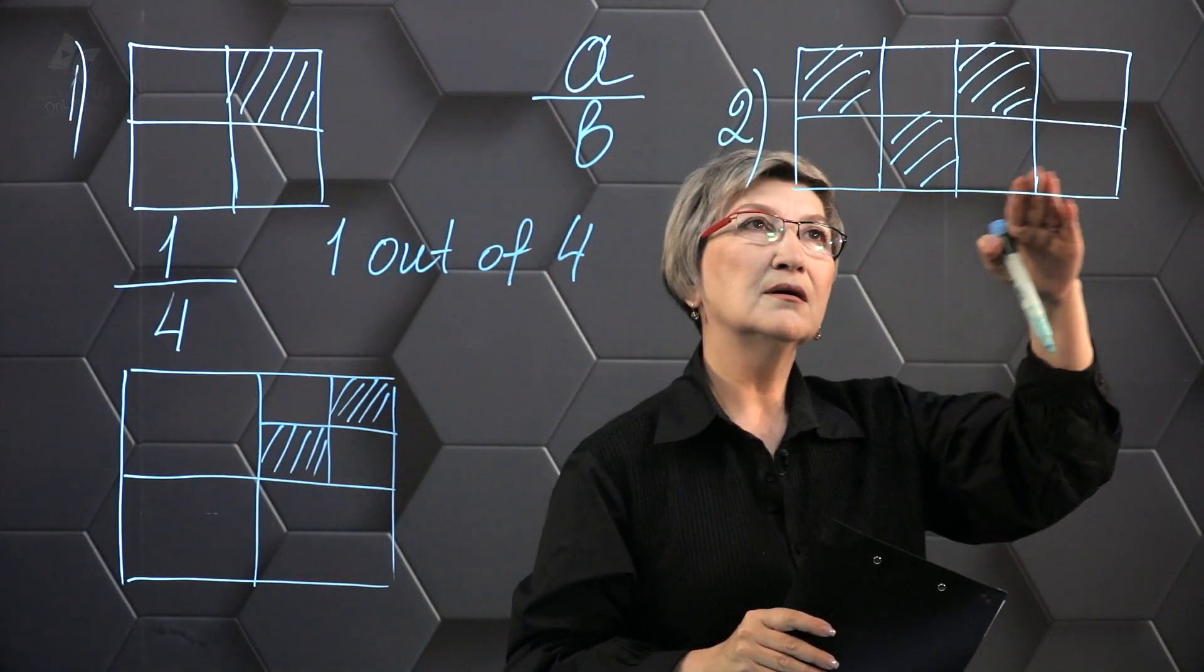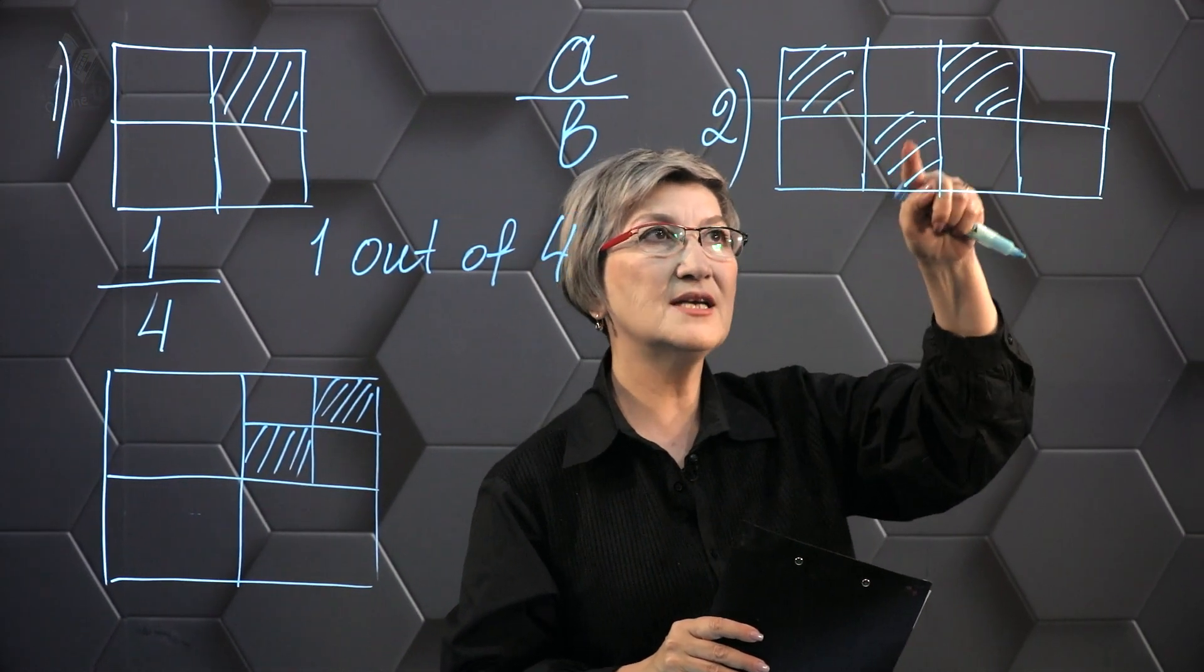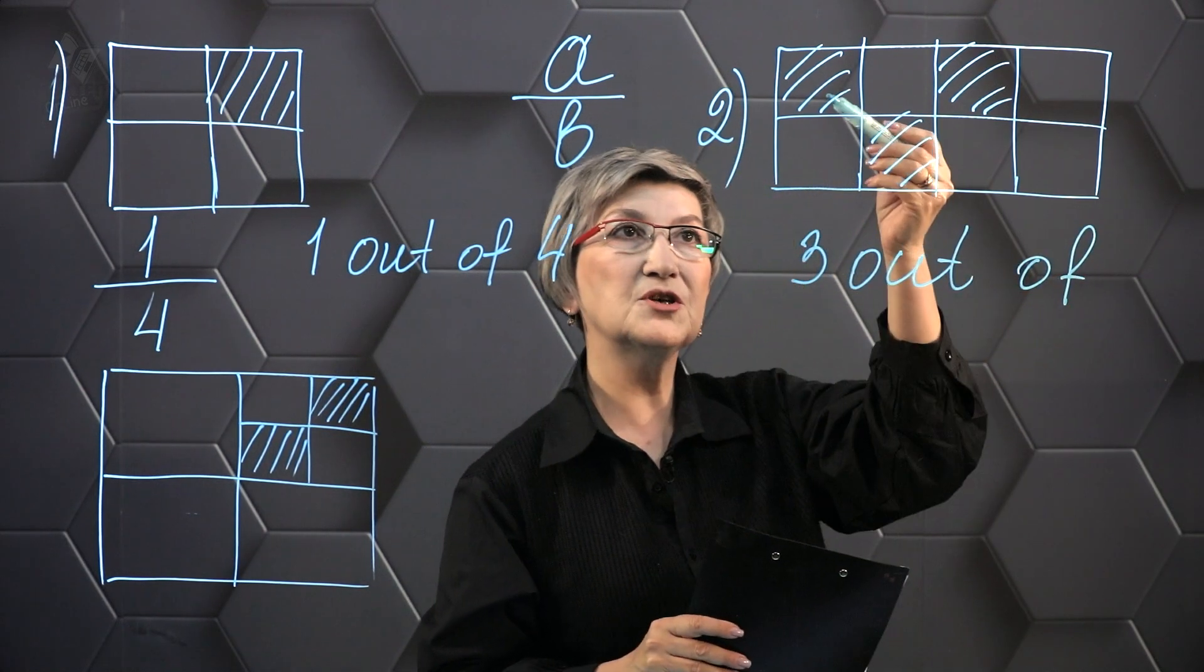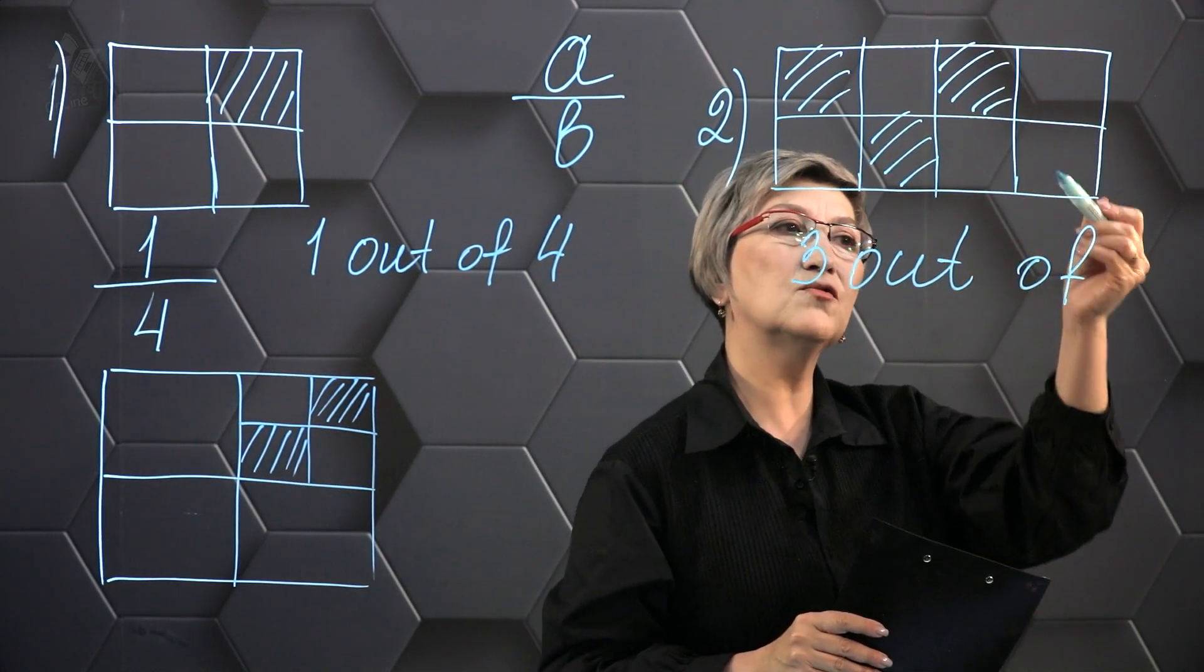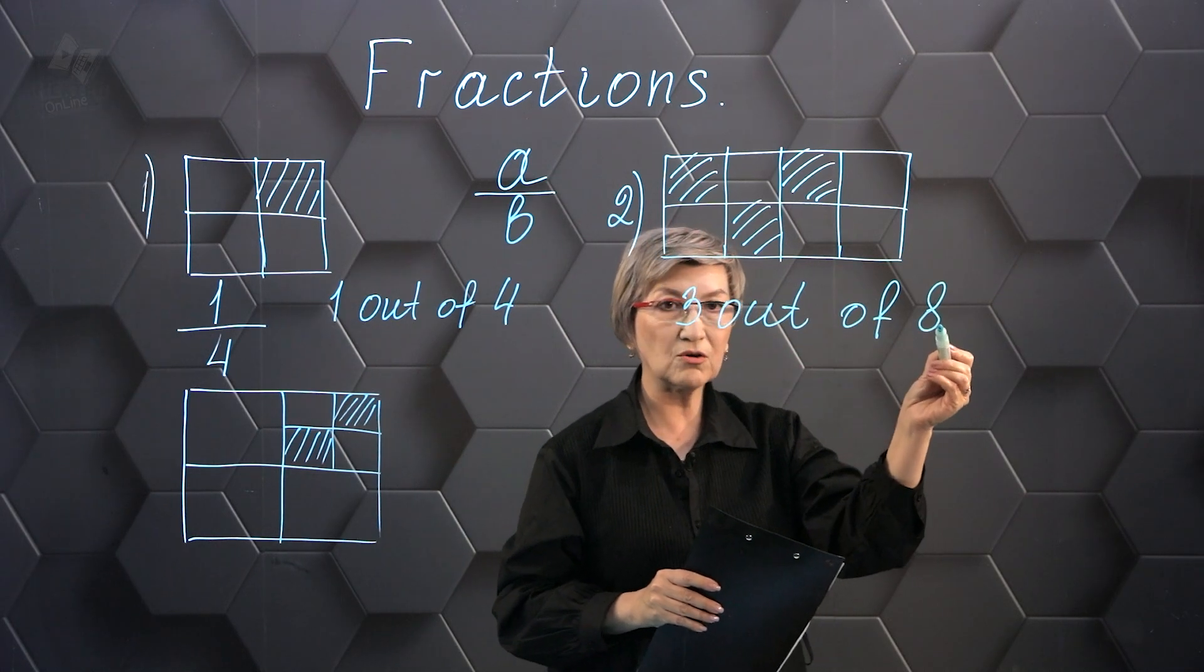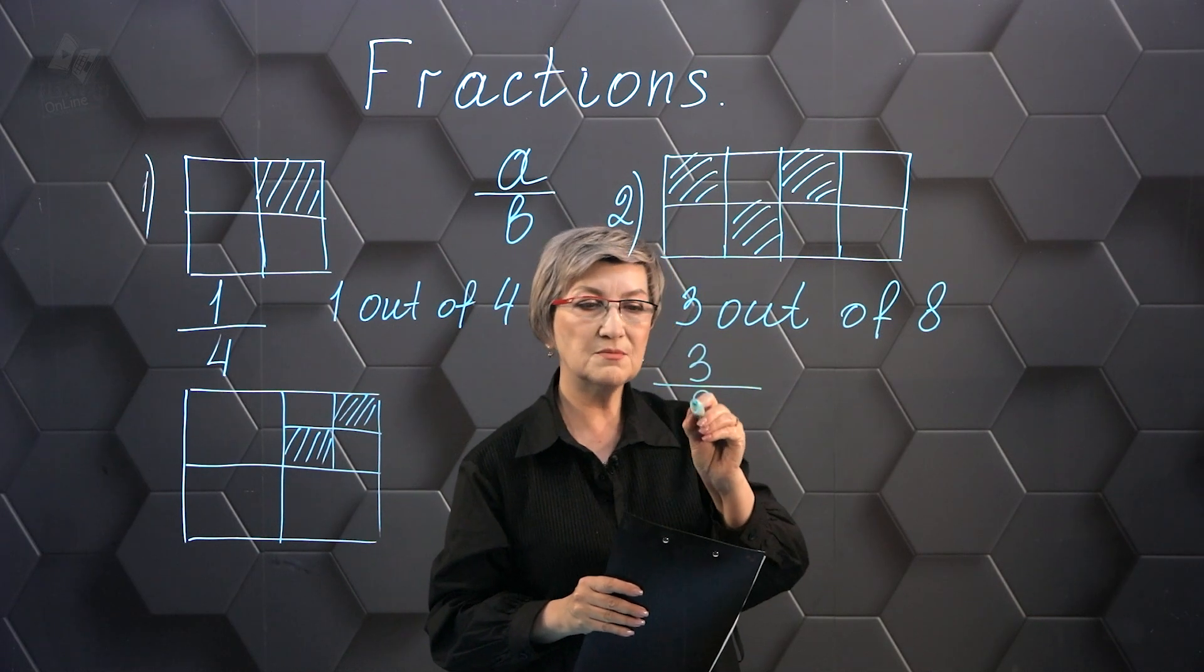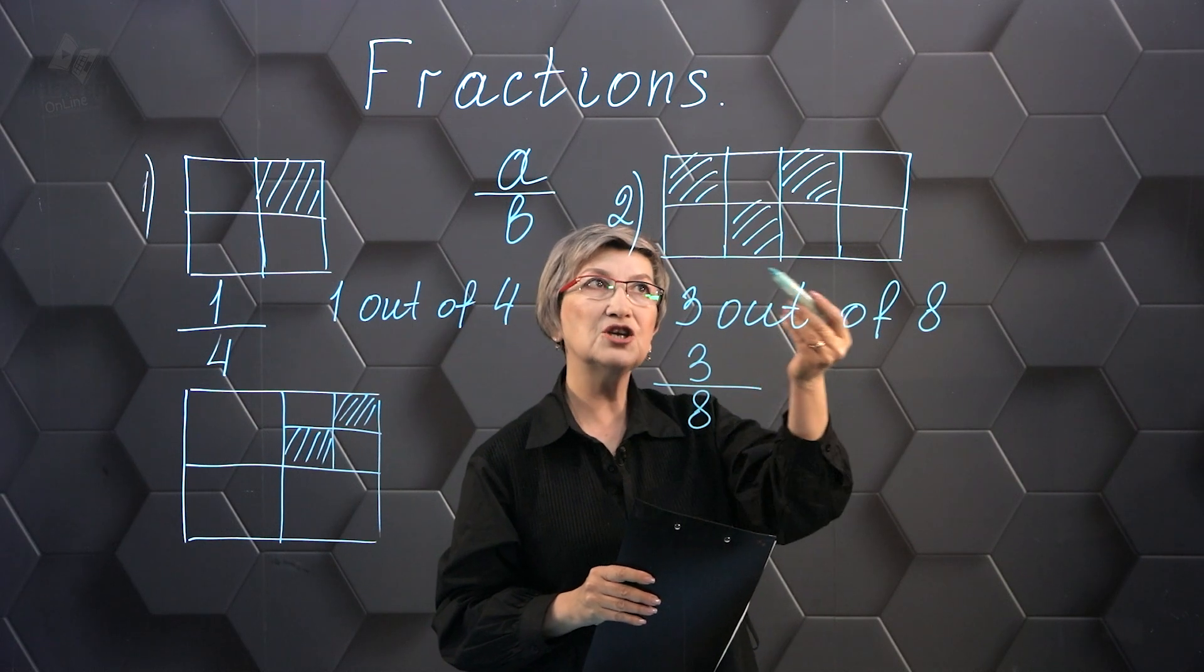Second example. In this case, we see three parts which are shaded of how many parts? Let's count all the parts. One, two, three, four, five, six, seven, eight. Eight parts. If we write it down first like this, it's easier to write down the fraction. And I'm going to write down three of eight parts. It turns out that three of the eights are shaded.